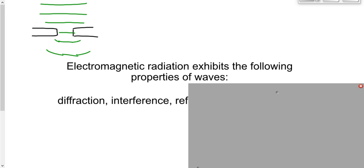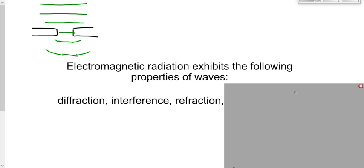The third wave property is called refraction. Refraction — we touched on this in Physics 20 — is the bending of a wave. When a wave goes from one medium to another at a certain angle, the direction will change; it will bend. That's called refraction. It happens because of a change in speed when the wave goes from one medium to the other. We'll talk about that in more detail later in the unit.